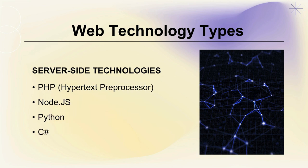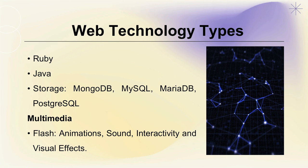The next web technology type is Server-Side Technology, which includes PHP (Hypertext Pre-processor), Node.js, Python, C#, Ruby, and Java. For storage, it includes MongoDB, MySQL, MariaDB, and PostgreSQL. Next is Multimedia, which includes Flash, Animation, Sound, Interactive, and Visual Effects.